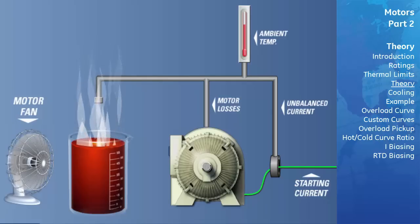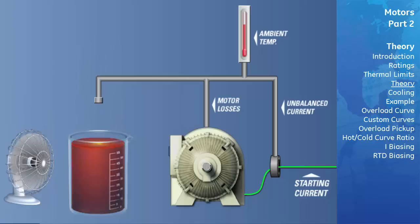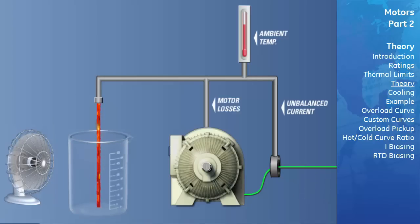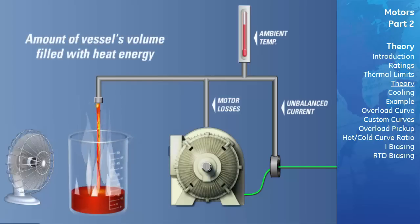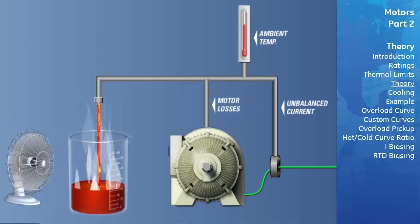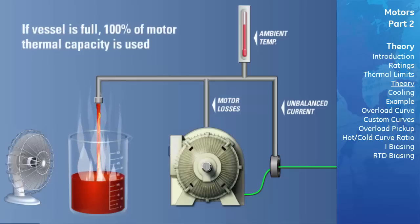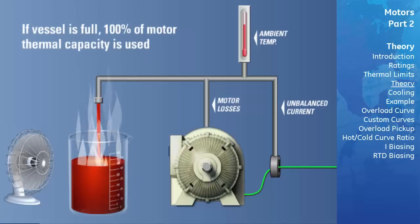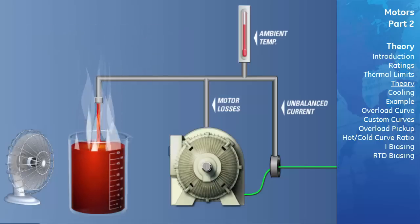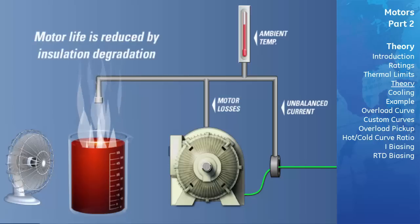With this model in mind, the thermal capacity used is expressed as a percentage of the total thermal capacity of the motor — the amount of the vessel's volume that has been filled with heat energy. If this imaginary vessel is full, 100% of the thermal capacity has been reached, and any further increase will result in damage to the motor's insulation. The motor insulation does not immediately melt; rather, the rate of insulation degradation reaches a point where motor life will be significantly reduced if it continues to run under this condition.